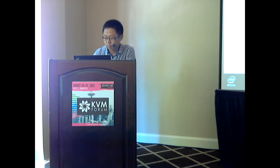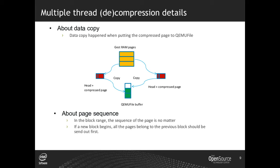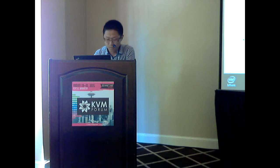The multi-thread decompression works in the same way. One extra data copy happens when putting the compressed page data into the QEMU file. In the block range, ordering of pages must be maintained. One important requirement is that if a new block begins, all pages belonging to the previous block must be sent out first.